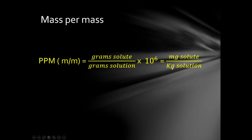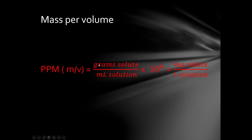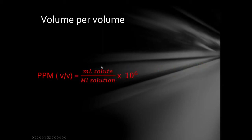Volume per volume PPM: volume unit on top, volume unit on bottom — simply milliliters over milliliters times 10⁶. There's no shortcut cheat method for this one.